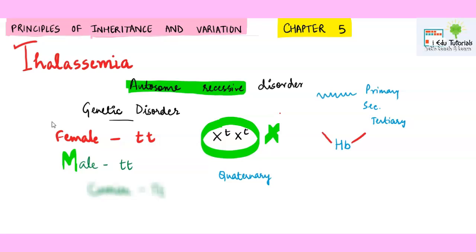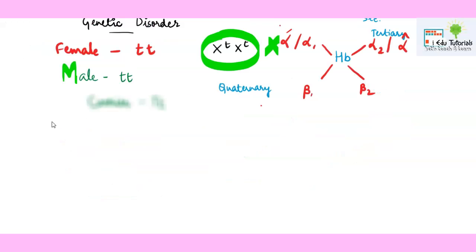Hemoglobin is made up of four chains: alpha-1 (also called alpha-dash), alpha-2 (also called alpha-cap), beta-1, and beta-2. These are the four polypeptides present in the hemoglobin structure. This disorder arises due to mutation or deletion in the chromosomes.